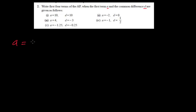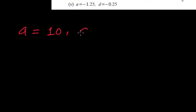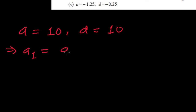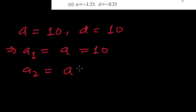So the first term is already given — A is 10, and the common difference is 10. So A1 equals A, that is 10, and A2 equals A plus D.